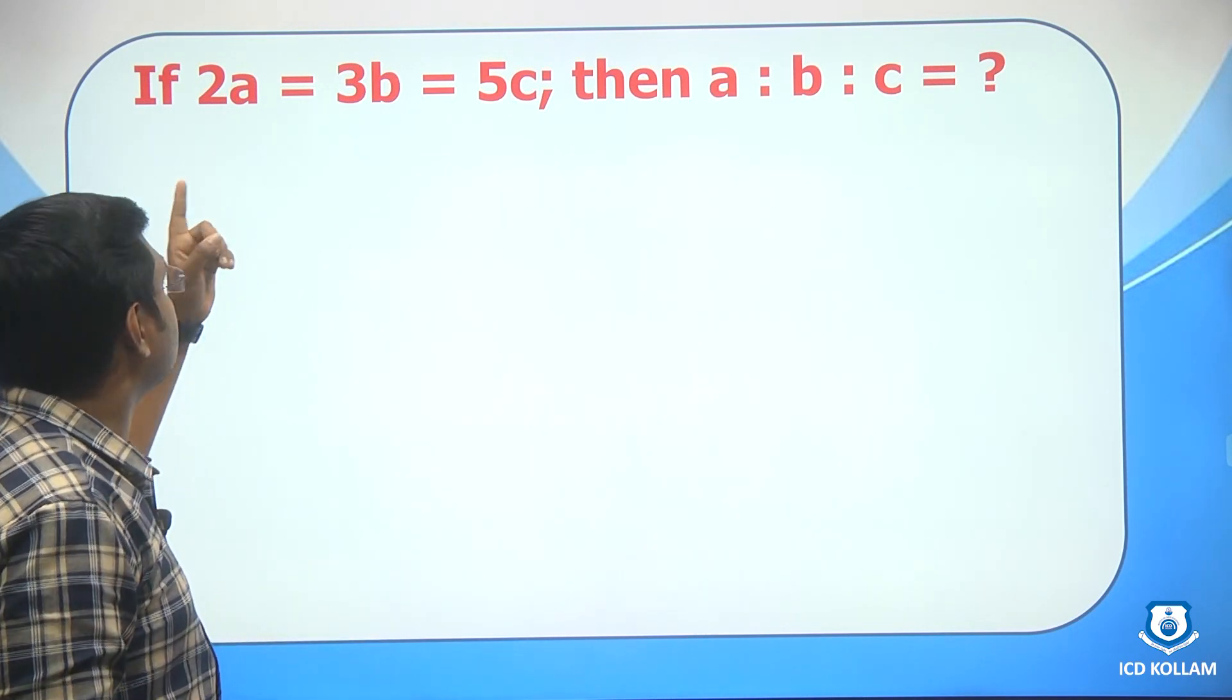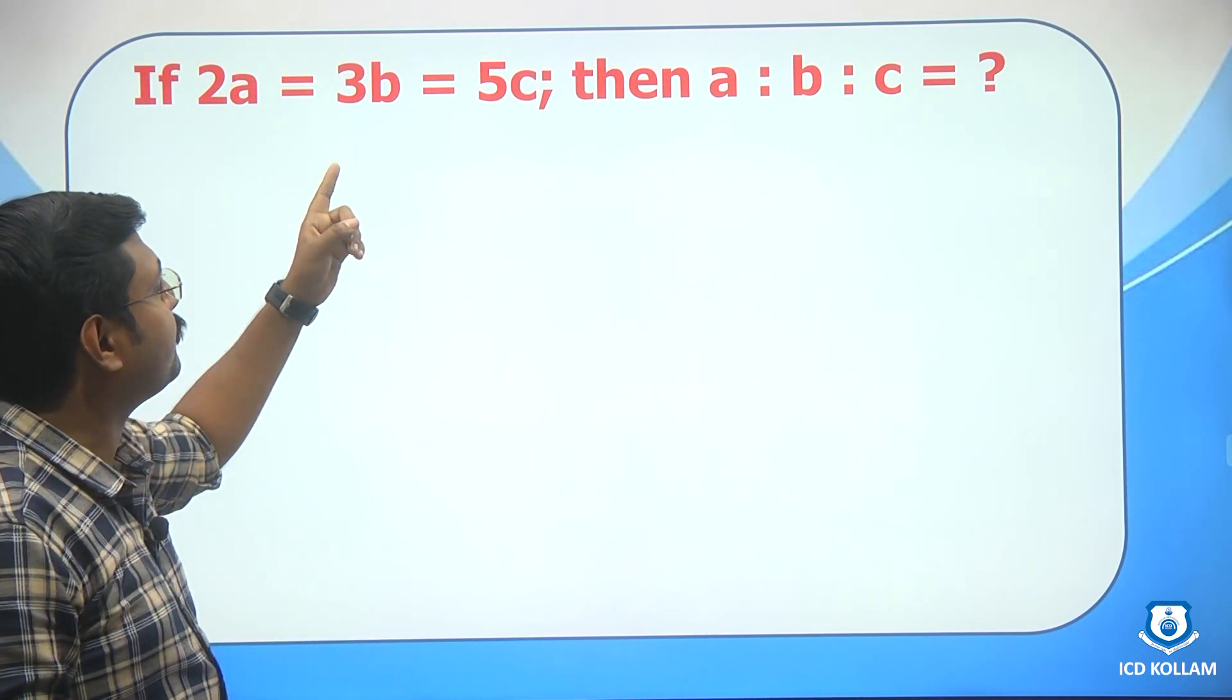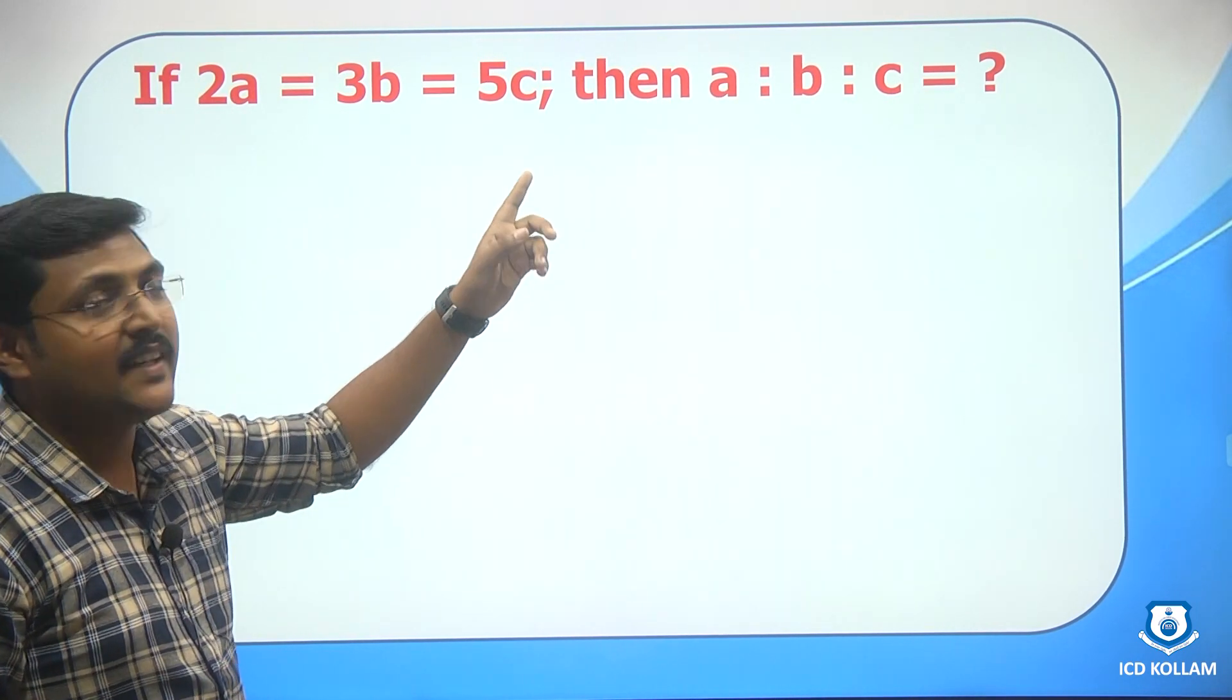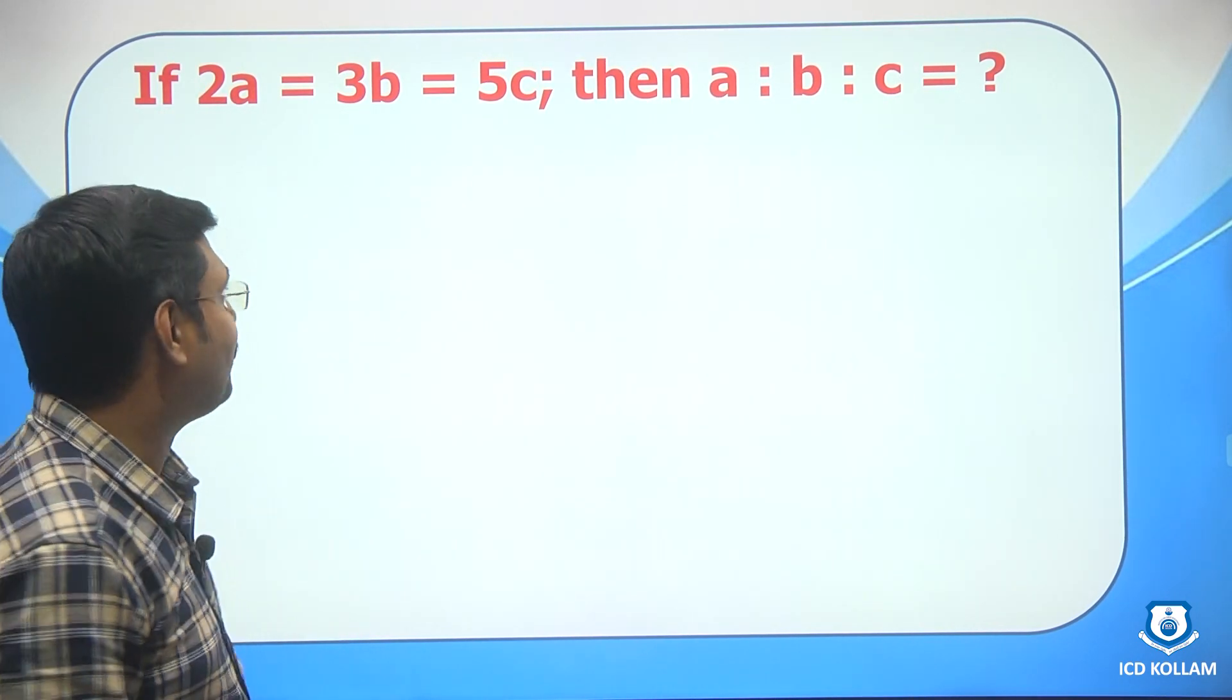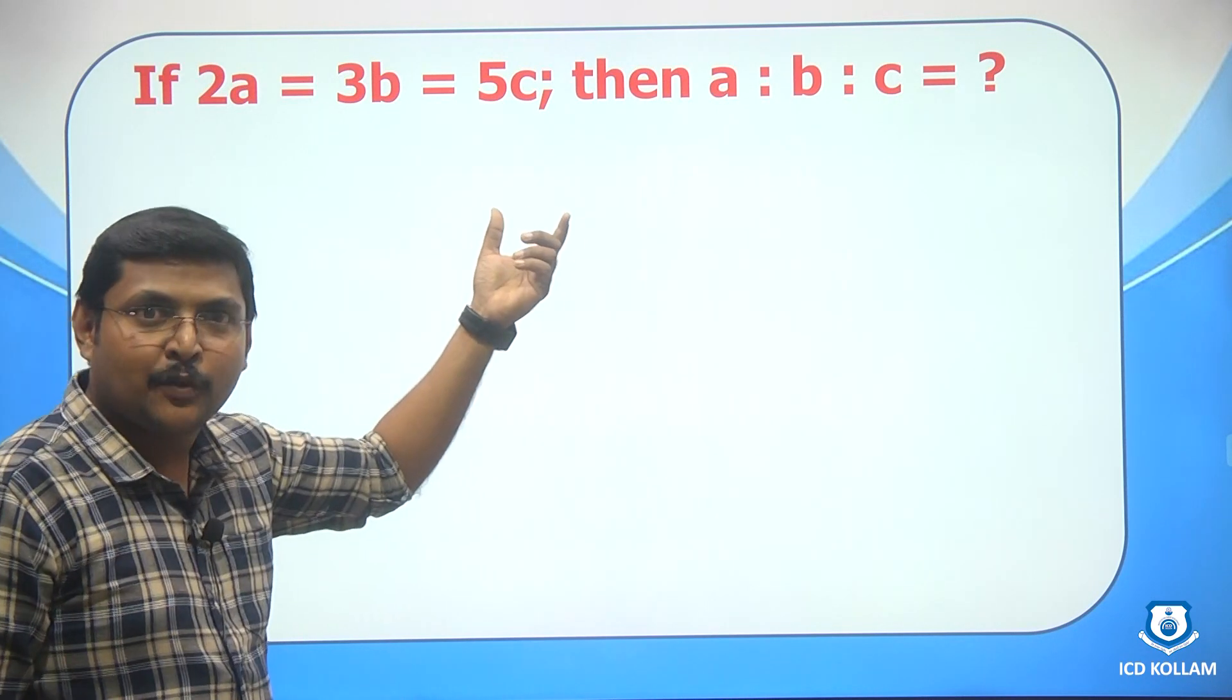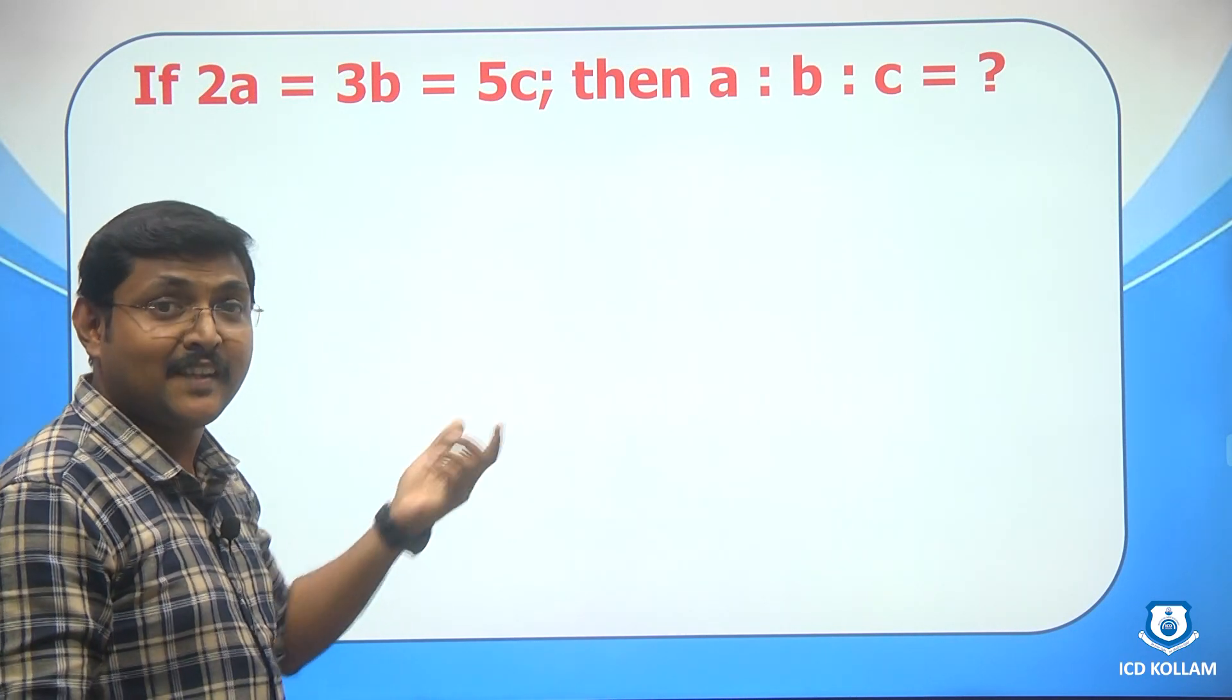Here goes the question: if 2a is equal to 3b is equal to 5c, then a is to b is to c is equal to? Listen, we need to find the ratio a is to b is to c and it is very easy to find.